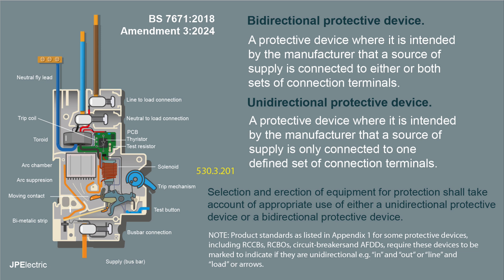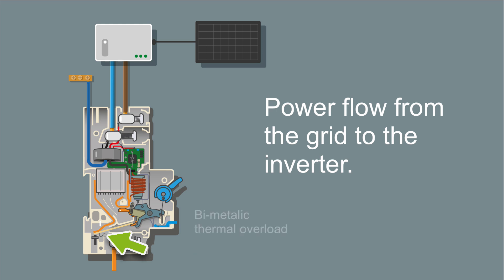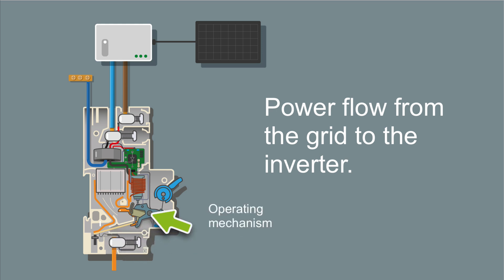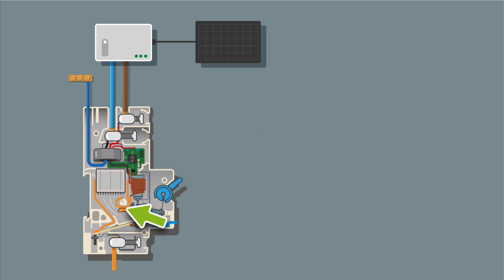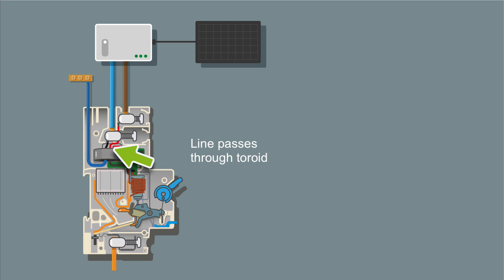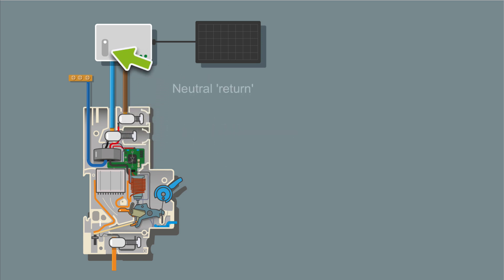Let's have a quick look at the flow of power through an RCBO. Power comes in on the bus bar, onto the bus bar terminal, goes onto the bi-metallic thermal overload, through the operating mechanism, there's the moving contact, goes through that, through the solenoid coil, then the live goes through the toroid, onto the line load terminal, and onto the load. It returns on the neutral back through the toroid.